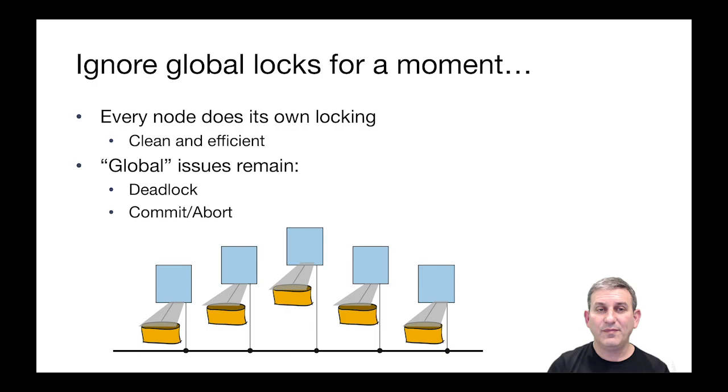Now, ignoring the global locks for a moment, every node is going to do its own locking for its local locks. When it locks a tuple, it's going to lock it locally. When it locks a page, it's going to lock it locally. This is simple. It's efficient. It actually just reuses the code we already had for single-node databases in the straightforward way.